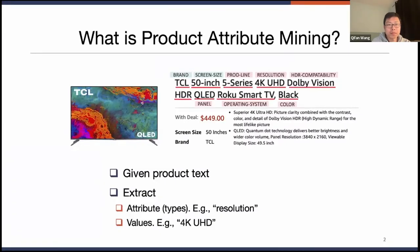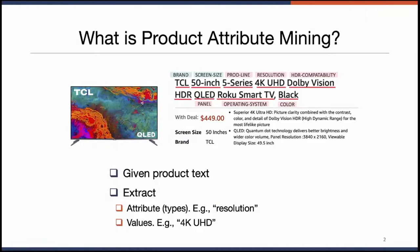First, let's talk about what is Product Attribute Mining. Given an e-commerce product, for example a TV product, Product Attribute Mining aims to extract the attributes from the product. For example, resolution is an attribute of a TV, and also the values for those attributes — for example, 4K UHD is a specific value for that attribute.